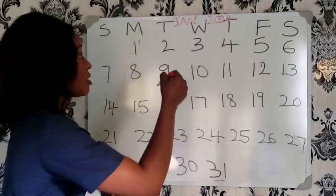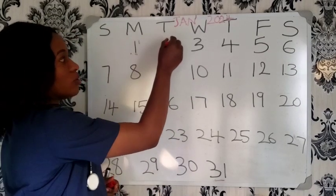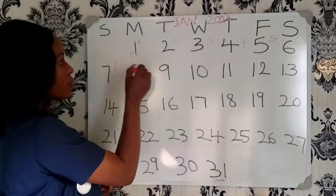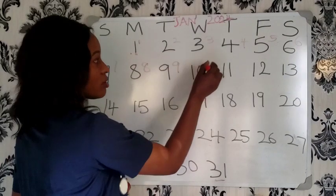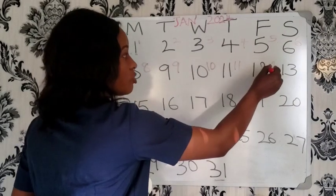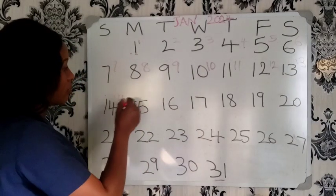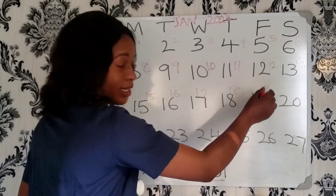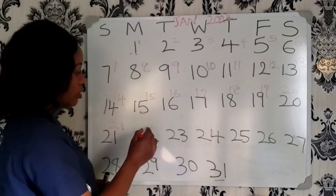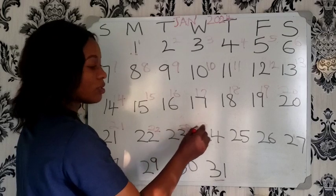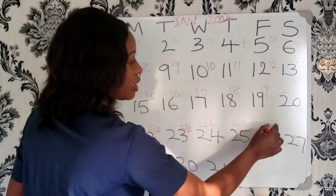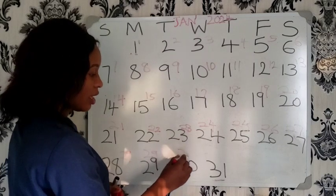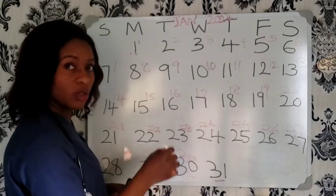Starting from day one, we count each day of her cycle: day 1, 2, 3, 4, 5, 6, 7, 8, 9, 10, 11, 12, 13, 14, 15, 16, 17, 18, 19, 20, 21, 22, 23, 24, 25, 26, 27, 28, 29, and 30. That confirms she has a 30-day menstrual cycle.